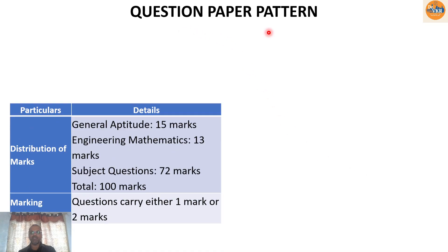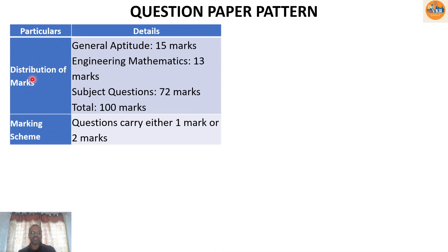Looking at the mark distribution for the question paper: General Aptitude carries 15 marks, Engineering Mathematics carries 13 marks, and subject questions carry 72 marks — this is for civil engineering. For some branches, the subject questions carry 70 marks. For civil engineering: 15 marks for General Aptitude, 13 marks for Engineering Mathematics, and 72 marks for Civil Engineering core subjects — total 100 marks.